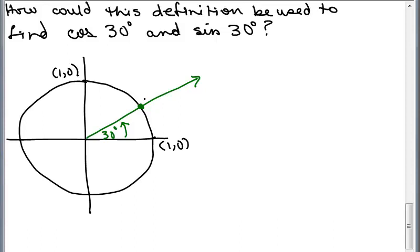So let's think about this. If I knew the coordinates of this ordered pair right here, the first coordinate would be the cosine of 30 degrees and the second coordinate would be the sine of 30 degrees. All right, well, how about if I just kind of look at this triangle? I could see that as a 30, 60, 90 triangle.